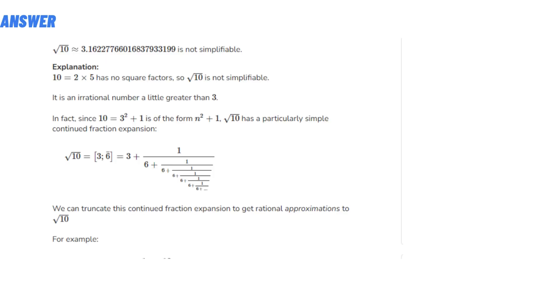The correct answer of the question is √10 = 3.16227766016837933199 is not simplifiable. Explanation: 10 = 2 × 5 has no square factors, so √10 is not simplifiable.